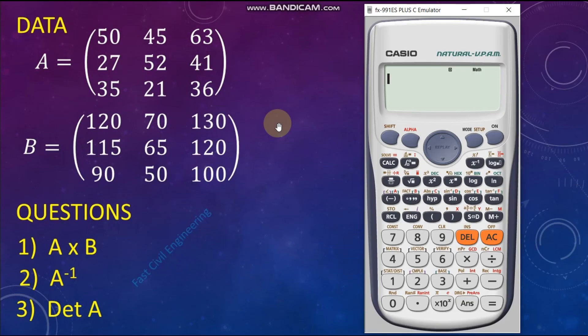Firstly, we have to change the calculator to Matrix Mod. For that, click the Mod button, click 6 for Matrix Mod, click 1 for Matrix A, click 1 for 3×3 Matrix. Input the Matrix A: 50 equal, 45 equal...